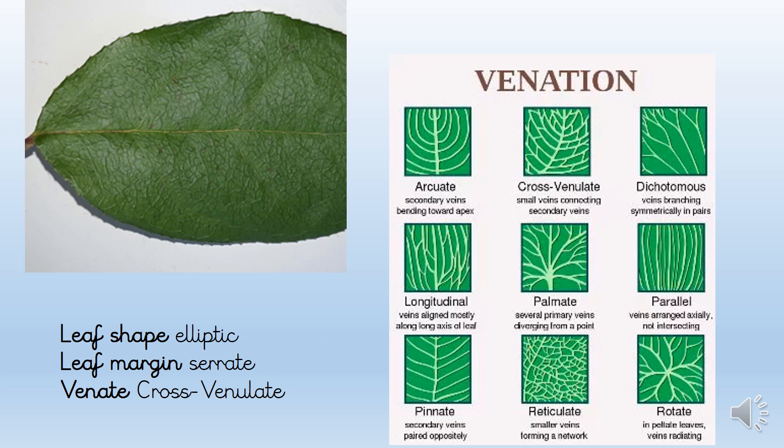Now venation — it sounds a bit like Venetian, but it has nothing to do with Venice. It means relating to the veins and how they are arranged. Look quite carefully at the leaf; if you have one of your own it's really helpful to turn it over. I can see some bigger veins and some smaller ones crisscrossing. Did you agree that it's cross venulate? It's quite hard, but just have your best go.